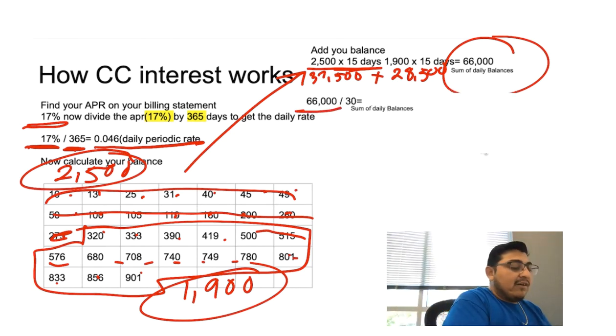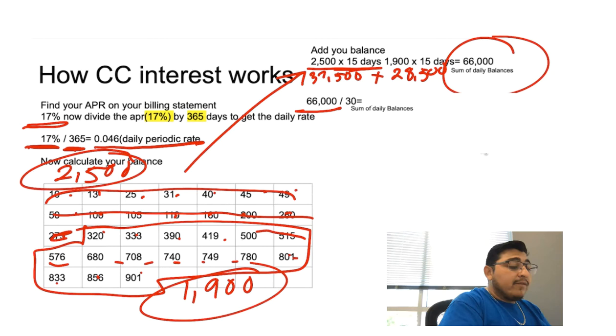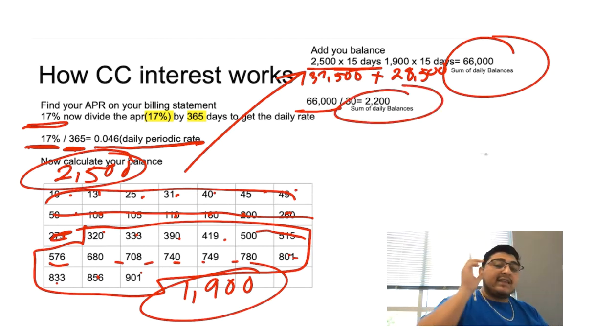We're going to get $66,000 and divide that by 30. Why 30? Because that's the number of billing days in your billing cycle. There's 30 days in one month and your billing cycle is 30 days. So $66,000 divided by 30 gives you a total of $2,200, and that's going to be the sum of your daily balance.